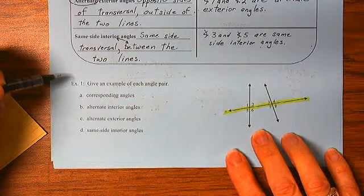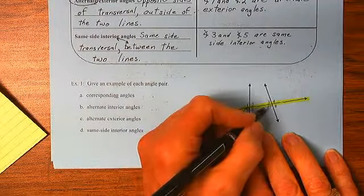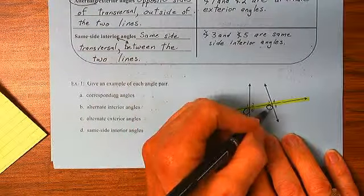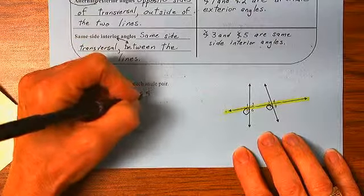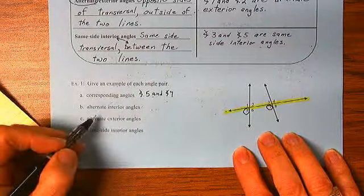So, for example, 5 and 7. Southwest, southwest. Angles 5 and 7 are corresponding angles.